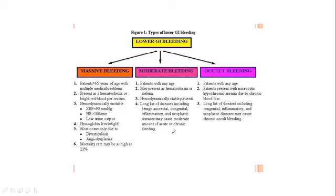In moderate bleeding, the patient can be any age — over 65 or younger. The patient presents with hematochezia or melena, and is hemodynamically stable. There is a long list of diseases including benign, rectal, congenital, inflammatory, and neoplastic diseases. For occult bleeding, the patient is of any age, presenting with macroscopic signs, hemoglobin drop, and evidence of chronic blood loss. A long list of diseases including congenital, inflammatory, and neoplastic diseases may cause occult bleeding.